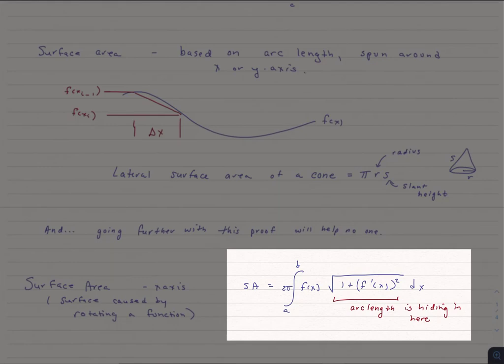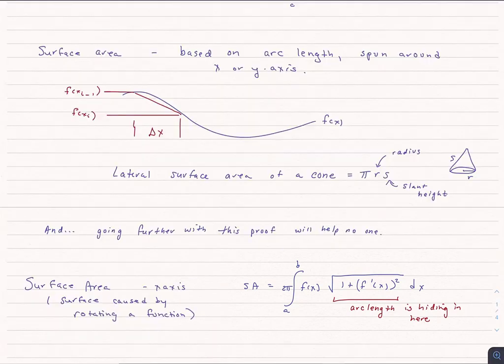It's 2 pi times the integral from a to b of f of x times that same thing we had in the arc length, the square root of 1 plus f prime of x, where the f prime is squared. So you do see that arc length as part of what's going on here.